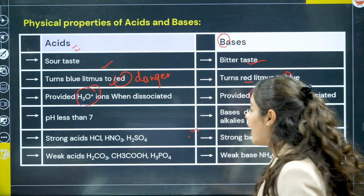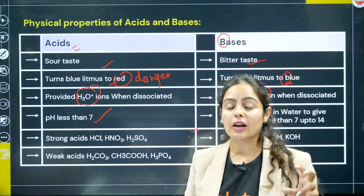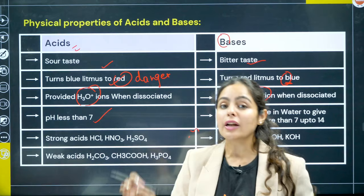The pH of acids is less than 7. As you can see on the pH scale, from 0 to 7 shows acidic behaviour. From 7 to 14 it will be basic. And if it's exactly 7, then it will showcase neutral behaviour.